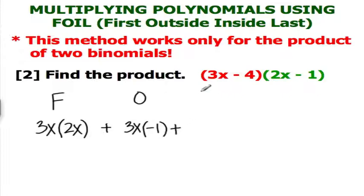Plus I, the inside term. That would be negative 4 and 2x. You take the product of both terms.